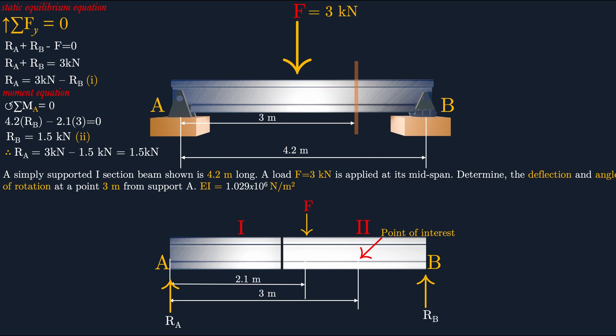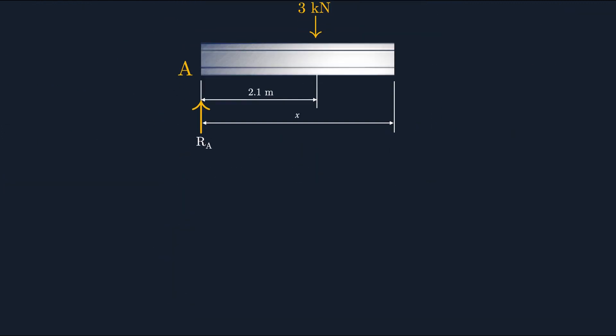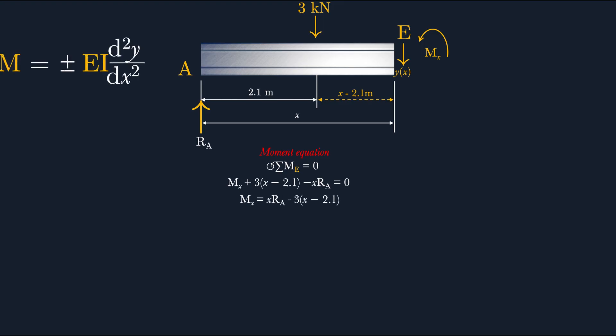Now let's find the deflection and angle of rotation. We cut the beam at the point of interest, denoting the distance from support A as x, to derive the general deflection equation. We name this point E. At point E, the beam has a deflection and a bending moment Mx. Taking moments about point E — since the beam is static, total moments equal zero — Ra acts at distance x, and if applicable, the force acts at distance x − 2.1. We write the moment equation and make Mx the subject.